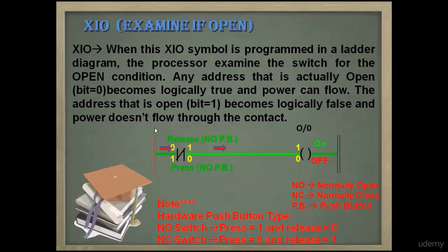In the ladder diagram, examine if open XIO instruction receives bit 0, then it passes the supply and turns on the output. If this instruction receives bit 1, then it blocks the supply and turns off the output. Working of XIO instruction is complementary to XIC switch.